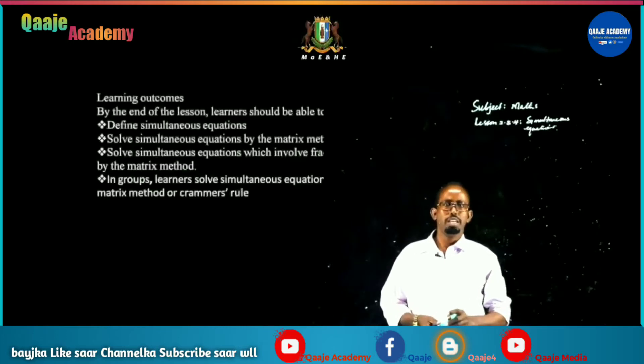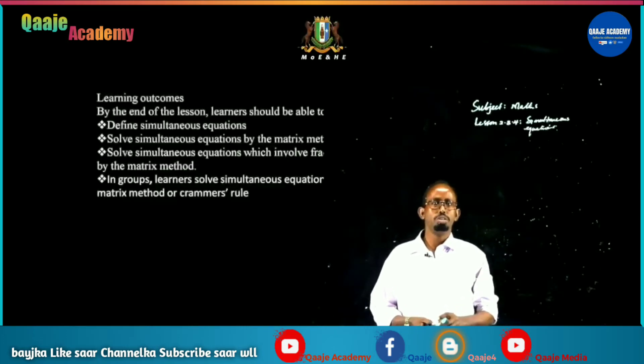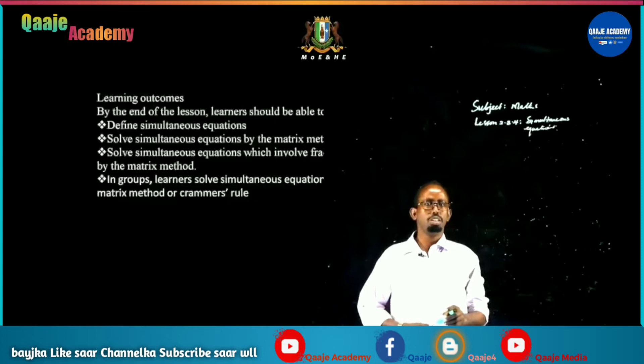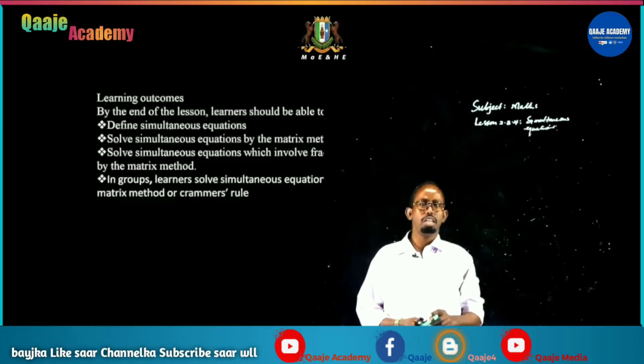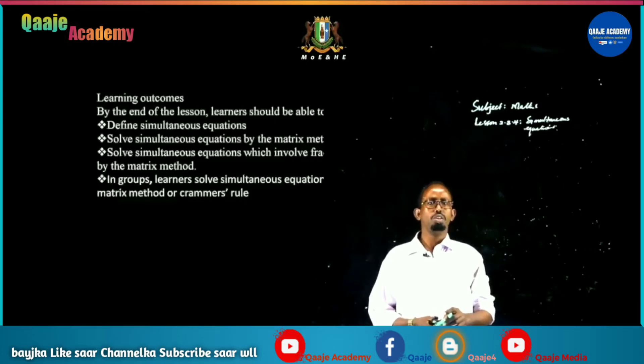Now, learning outcomes. By the end of the lesson, learners will be able to define Simultaneous Equations, solve Simultaneous Equations by Matrix, and also solve by Cramer's Rule.